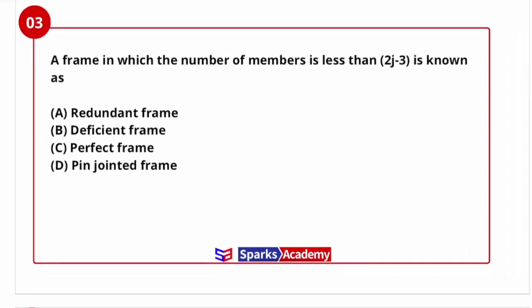The next question: a frame in which the number of members is less than 2j minus 3 is known as what? In a truss or frame, 'j' represents the number of joints. If the number of members is less than 2j minus 3, that represents a deficient frame.